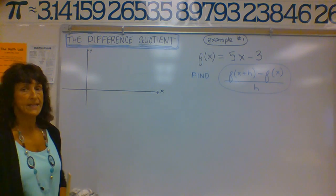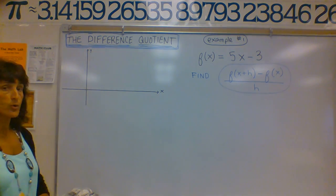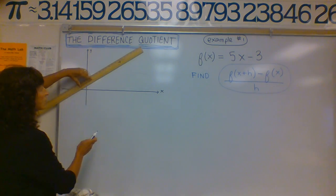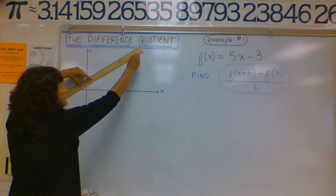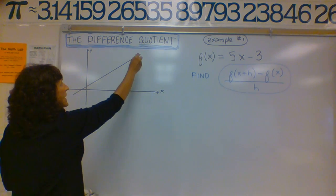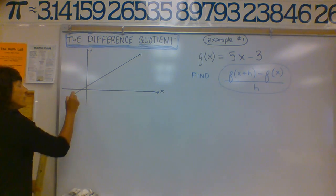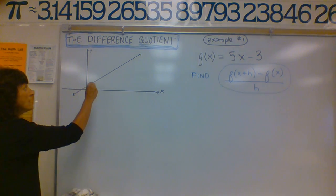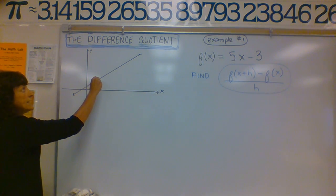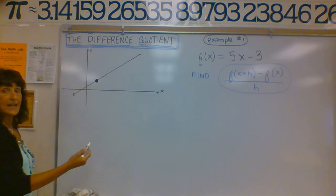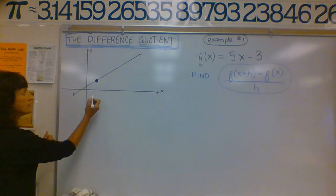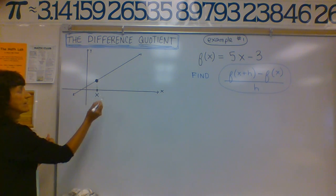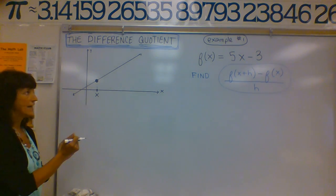So here I have an xy plane drawn on the board, and I'm going to go ahead and draw a line — a linear function. I'm going to plot two points on this line and give them a name. So I'm going to put my first point right here. The x-coordinate — just wherever it happens to be on the x-axis — let's just call it x, arbitrary x.